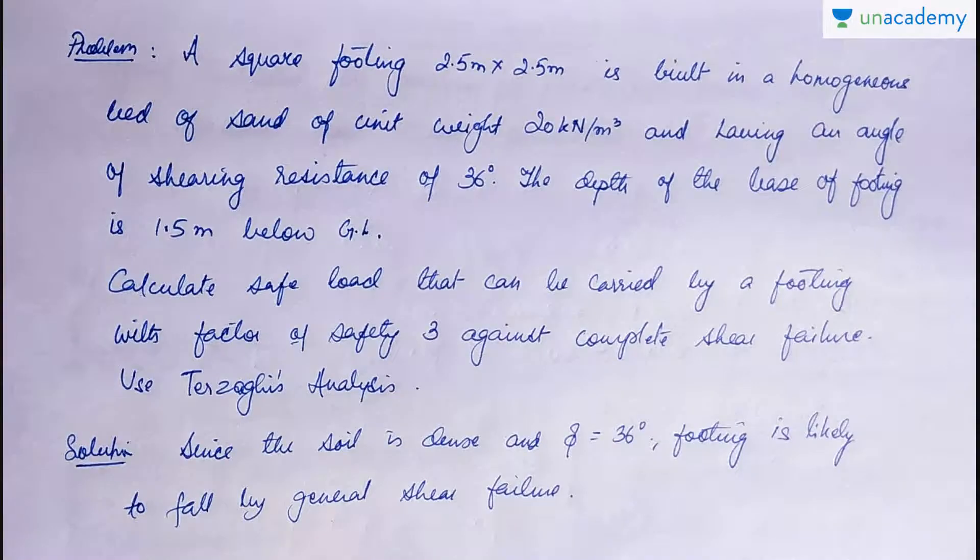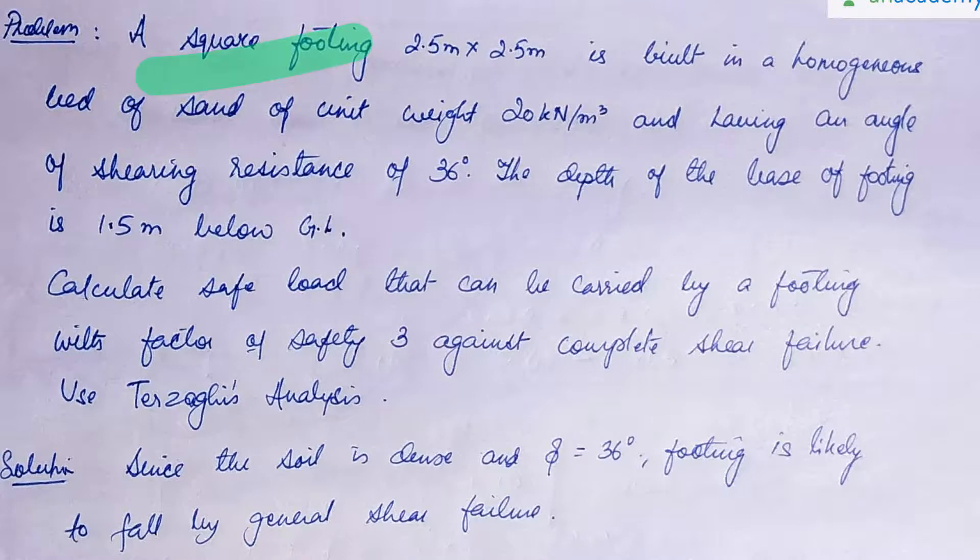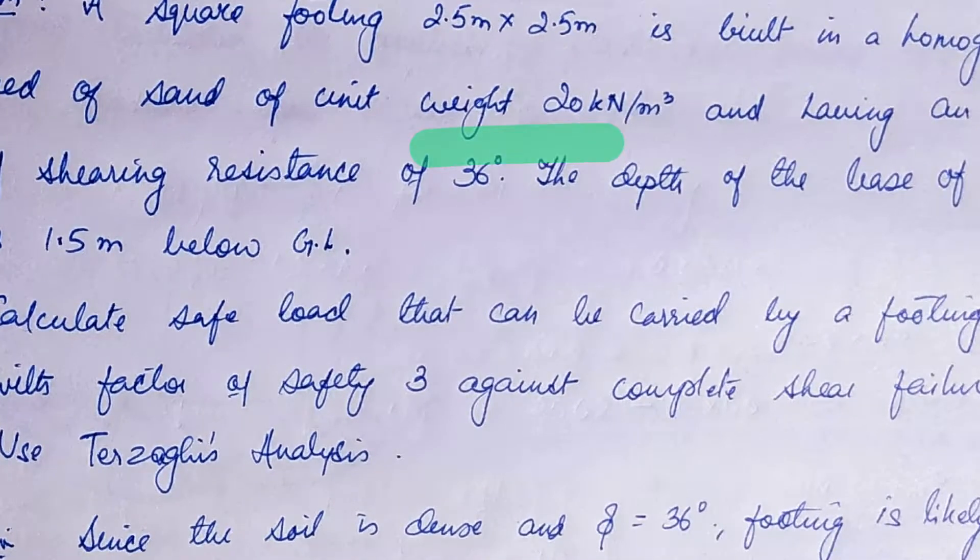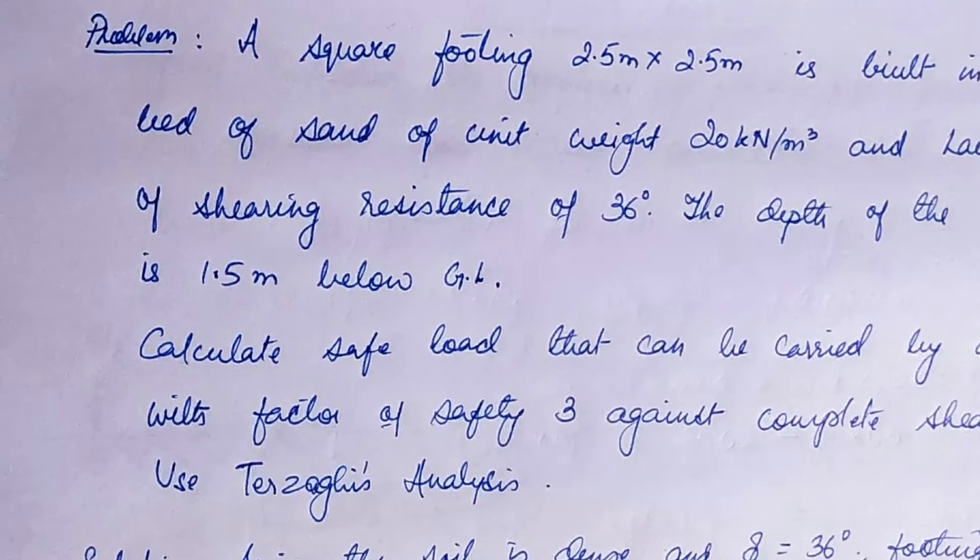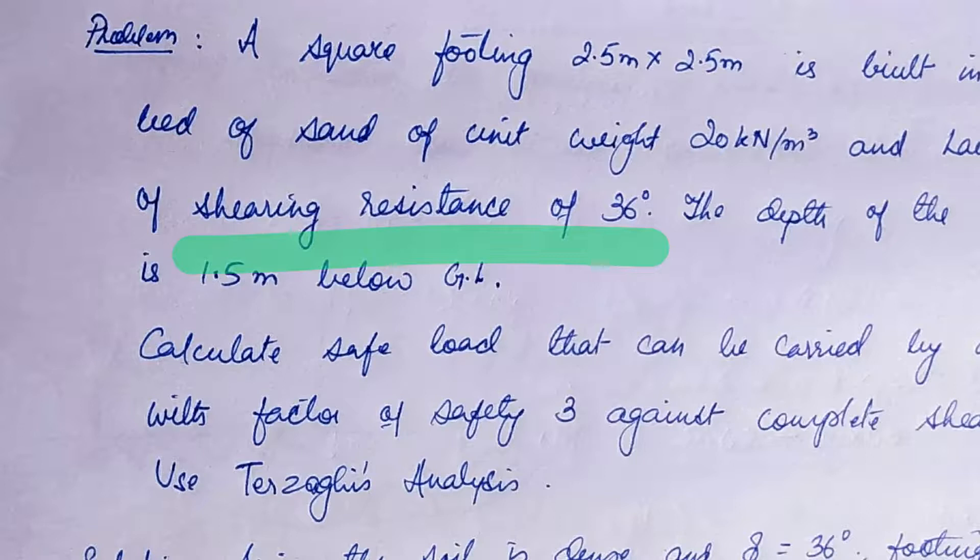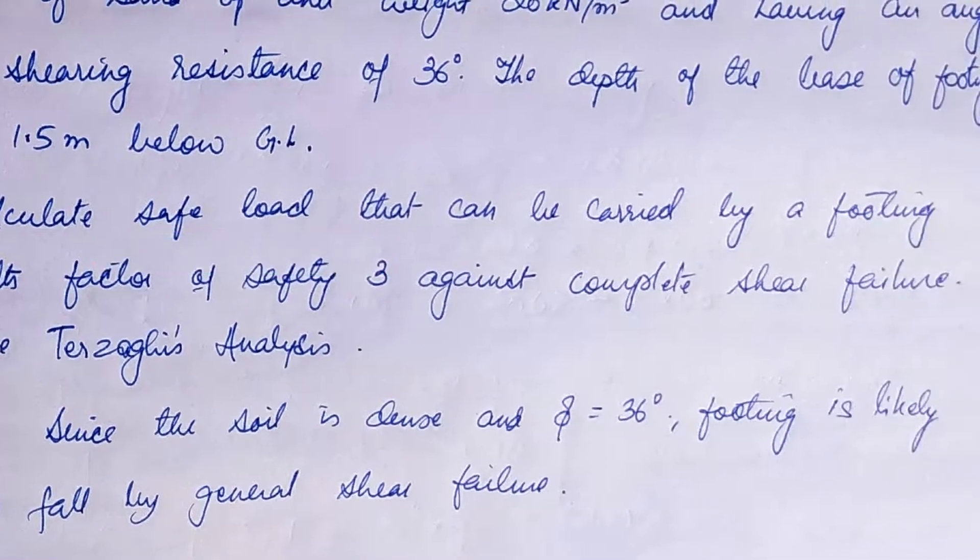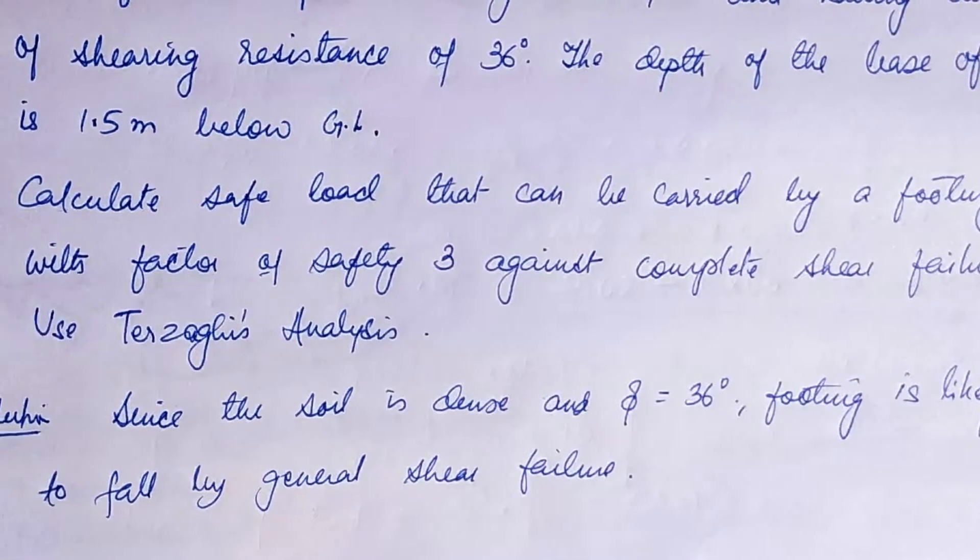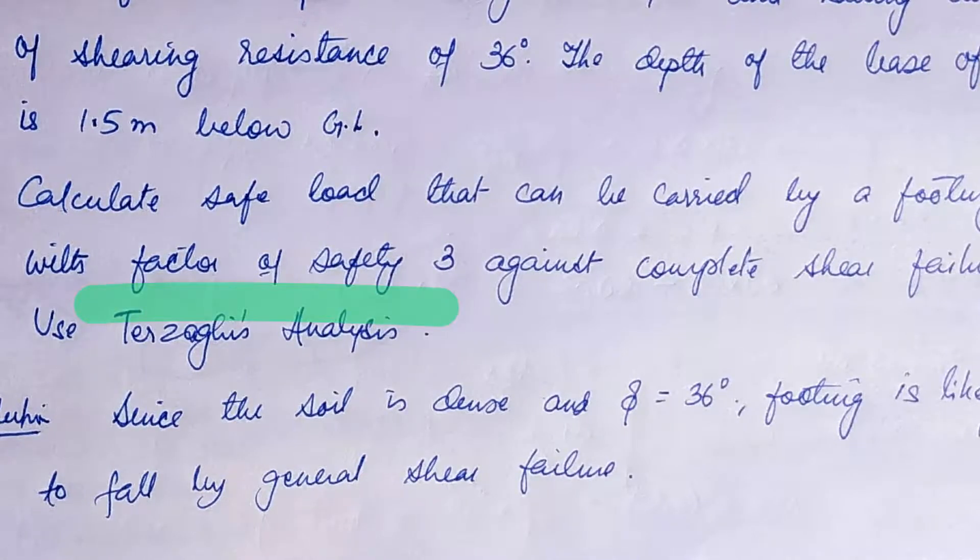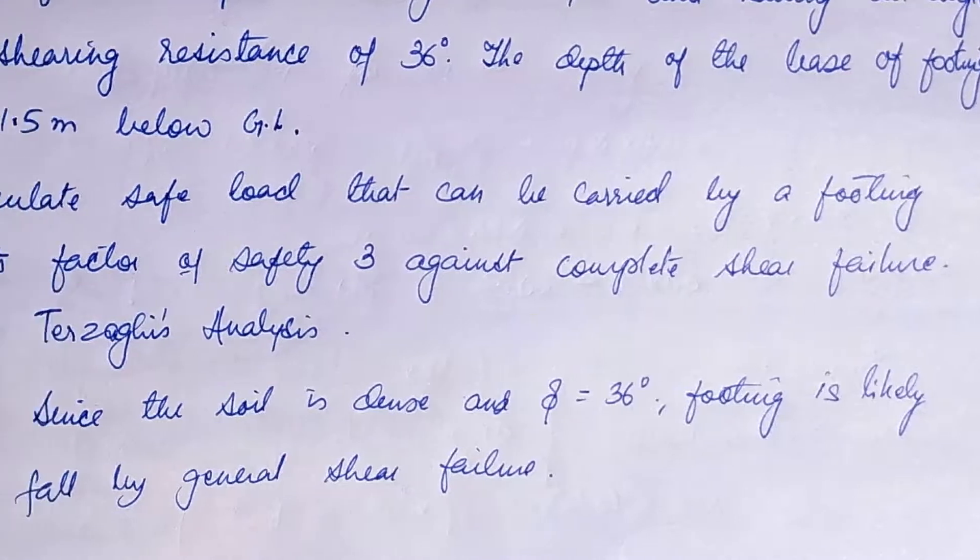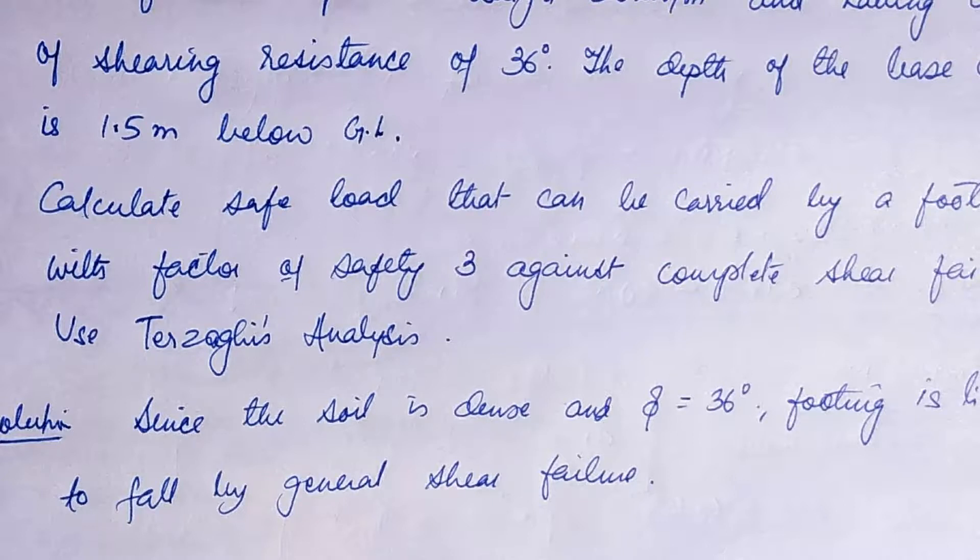Now let's solve a problem. A square footing 2.5 x 2.5 meter is built in a homogeneous bed of sand of unit weight 20 kN/m³ and having an angle of shearing resistance of 36 degrees. The depth of the base of footing is 1.5 meter below ground level. Calculate the safe load with factor of safety 3 against complete shear failure using Terzaghi's analysis.